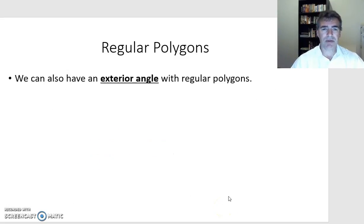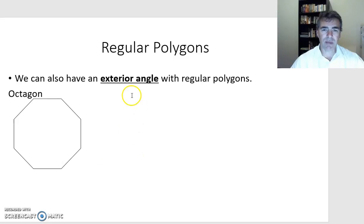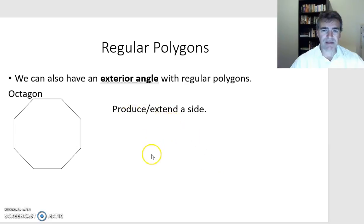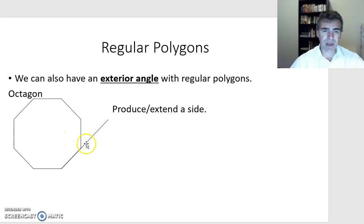Now we can also look at the exterior angle of regular polygons — that's an angle on the outside, just like we did with quadrilaterals. An exterior angle is formed when we extend or produce a side. We extend one side and form the angle between the figure and the produced line — that angle is called the exterior angle.